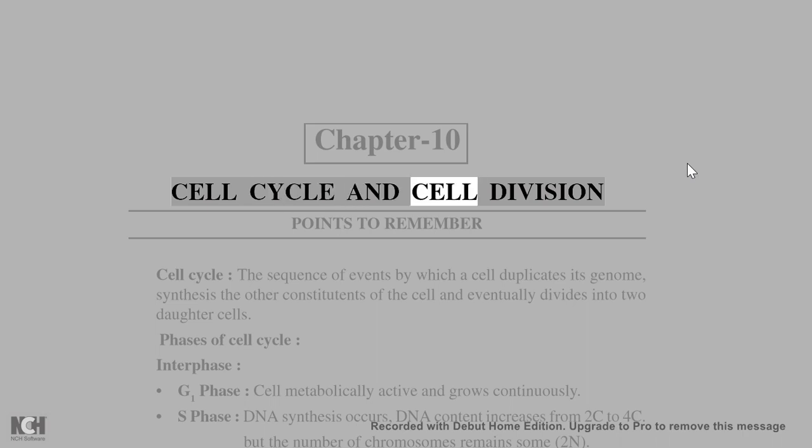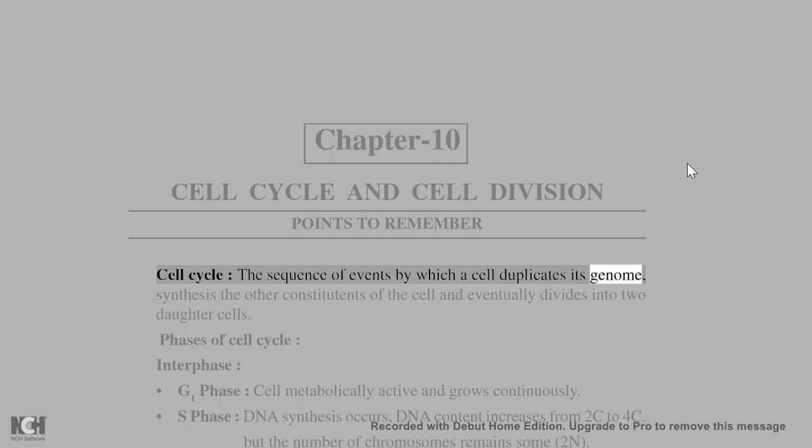Chapter 10: Cell Cycle and Cell Division. Points to remember: Cell cycle is the sequence of events by which a cell duplicates its genome, synthesizes the other constituents of the cell, and eventually divides into two daughter cells.